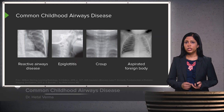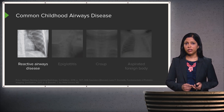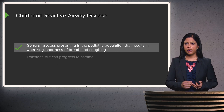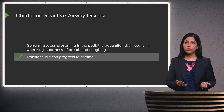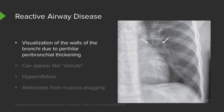Common childhood airway diseases include reactive airway disease, which is very commonly seen in kids. It's a general process presenting with wheezing, shortness of breath, and coughing. It's usually transient but often can progress to asthma. With reactive airway disease, we can see the walls of the bronchi in the perihilar region due to peribronchial thickening. You can see the lucent bronchi and the thickening of the walls around them, appearing like donuts in the perihilar region. Patients also have hyperinflated lungs and significant mucus plugging, which can result in atelectasis.